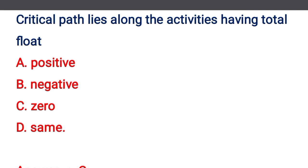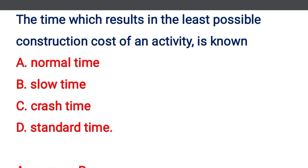Next question: critical path lies along the activities having total float — option A: positive, option B: negative, option C: zero, option D: same. The correct answer is option C: zero.